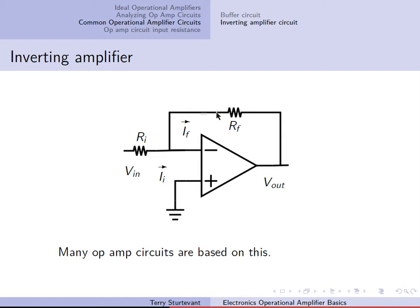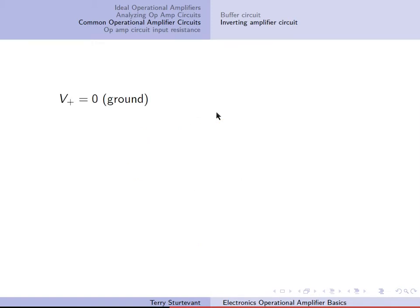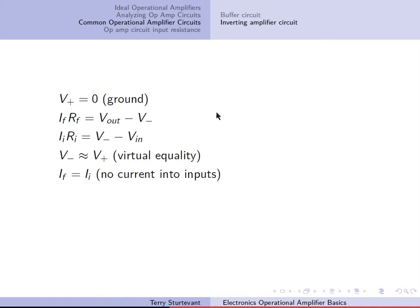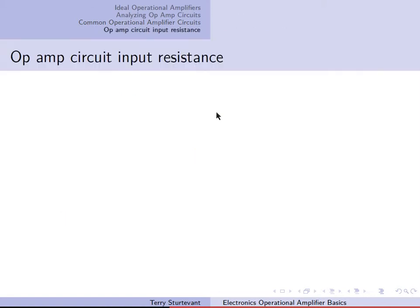This is the inverting amplifier, and many op-amp circuits are based on this. The non-inverting input is set to ground. The feedback equations show that the output is minus RF over RI times V-in.